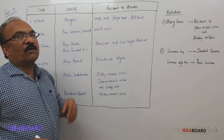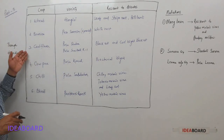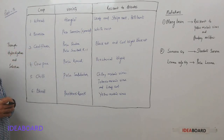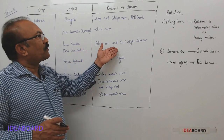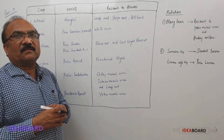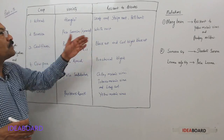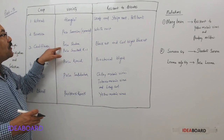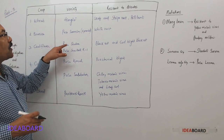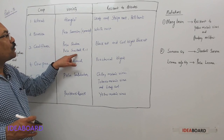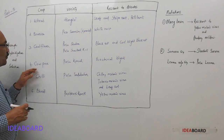In cauliflower, there is black rot and curl blight black rot disease. Two varieties were developed that are resistant to these diseases: Pusa Shubhra and Pusa Snowball K1.